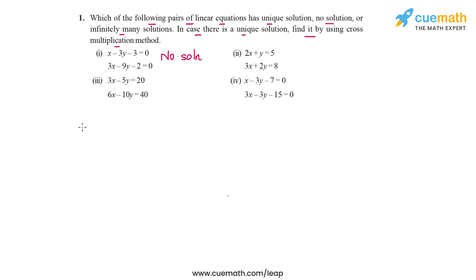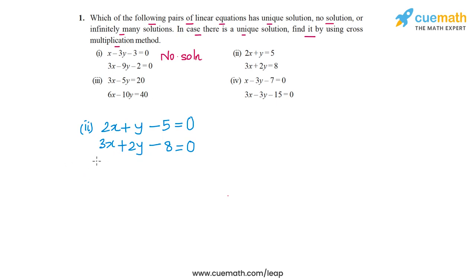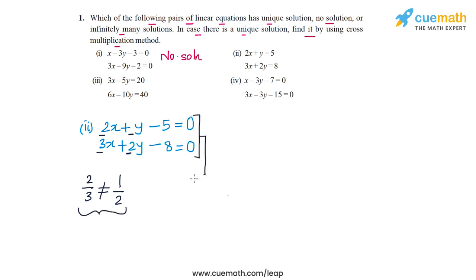In part 2, the pair of equations is 2x plus y minus 5 equal to 0, and 3x plus 2y minus 8 equal to 0. Let's check the nature of this system. The coefficients of x are 2 and 3, so a1 by a2 is 2 by 3. The coefficients of y are 1 and 2, so b1 by b2 is 1 by 2. Since a1/a2 is not equal to b1/b2, we don't need to check c1/c2 — this pair has a unique solution.